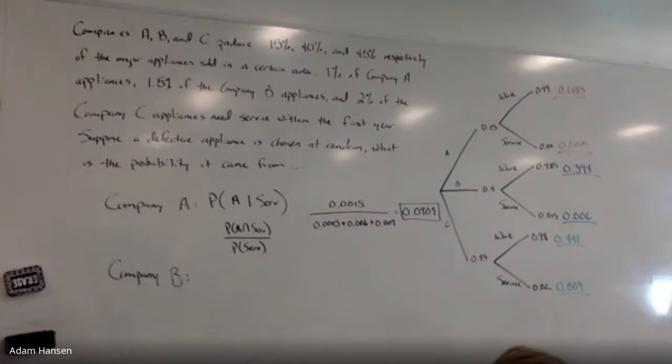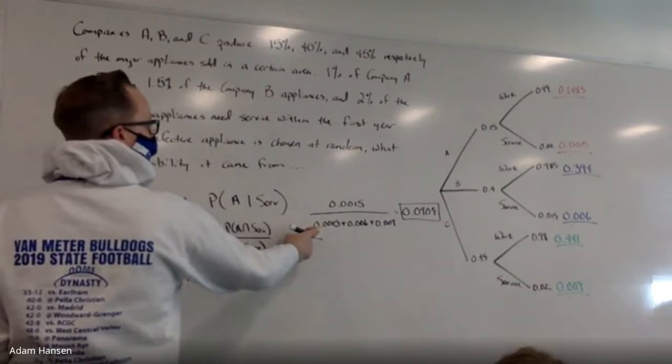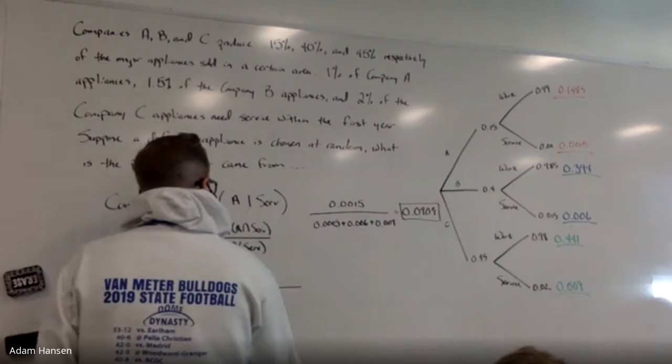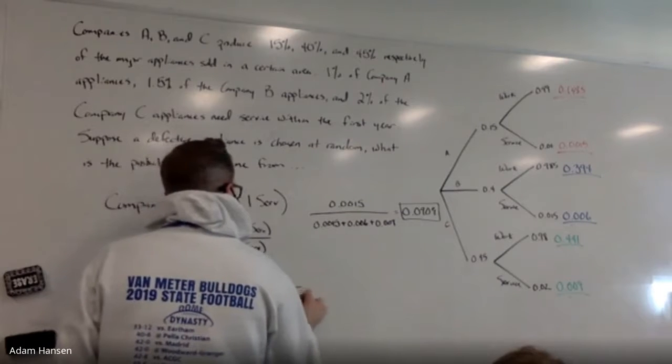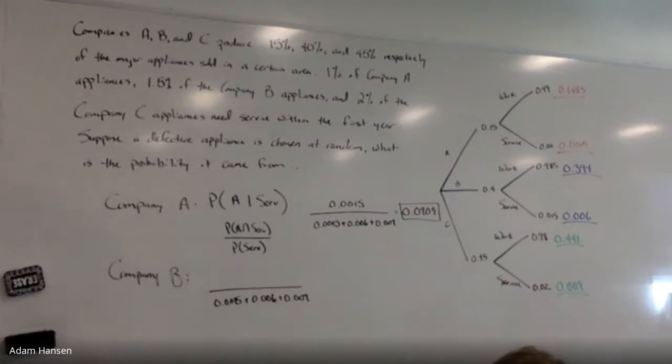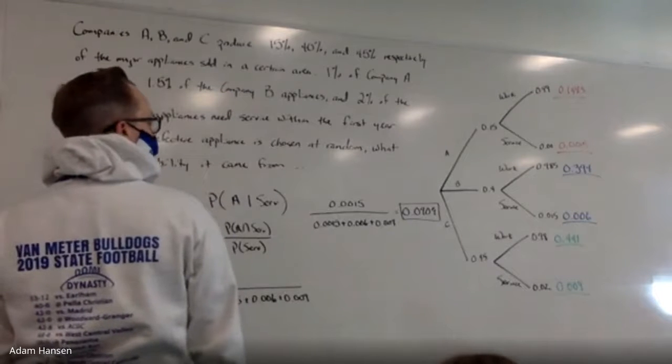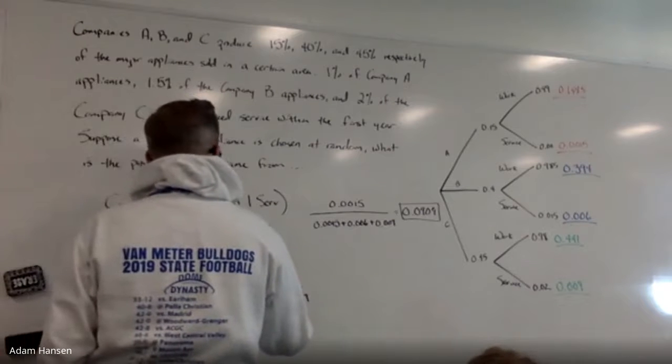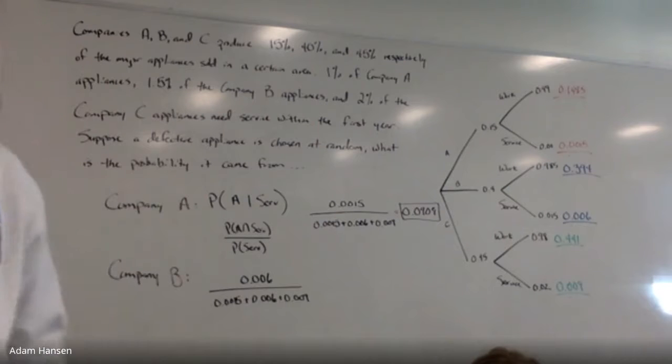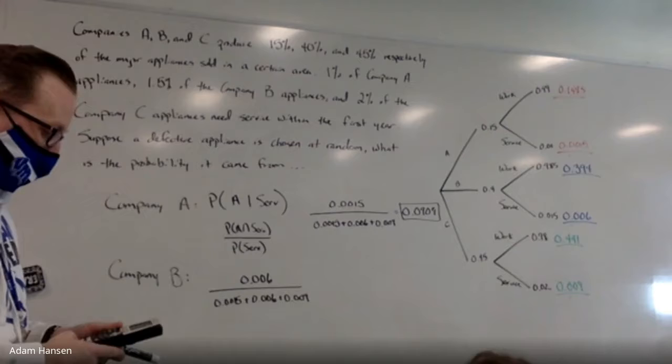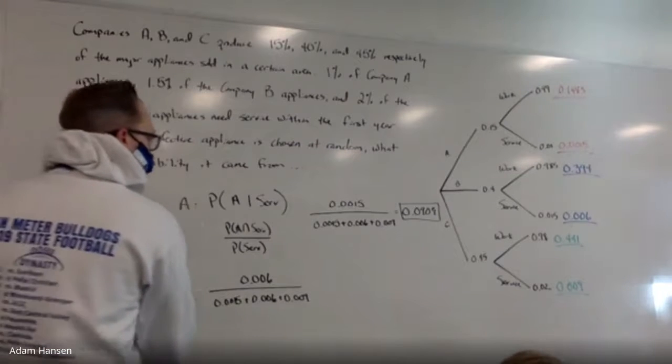We'll do the same thing for Company B. I'm going to have the same three tallies for appliances that need servicing, but then what part of that came from group B? 0.006, just the second number, that part right there. Those that needed servicing that also came from Company B: 0.006. That's 36.36%, significantly higher, about four times as likely.